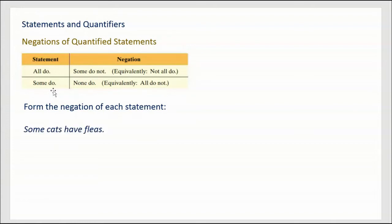Let's do an example: 'Some cats have fleas.' We're trying to negate this. This is a 'some' situation. Using the hint — if 'some do,' then the negation is 'none do' — we get: 'No cats have fleas.' That is the negation of 'some.'